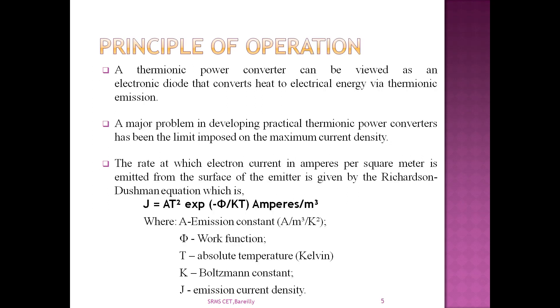Next, the principle of thermionic emission. A thermionic power converter can be viewed as an electronic diode that converts heat to electrical energy via thermionic emission. It can also be regarded in terms of thermodynamics as a heat engine that utilizes an electron-rich gas as its working fluid. Now, a major problem in developing practical thermionic power converters is limits on the maximum current density because of the space charge effect. As electrons are emitted from the electrodes, their negative charge repels one another and disrupts the current.